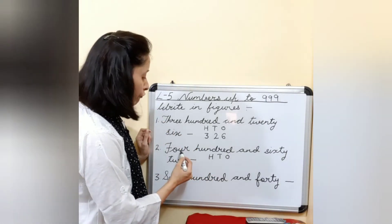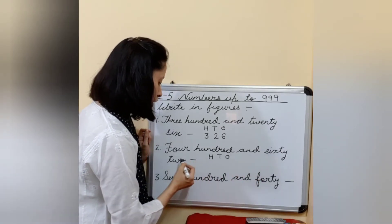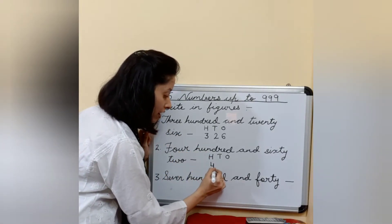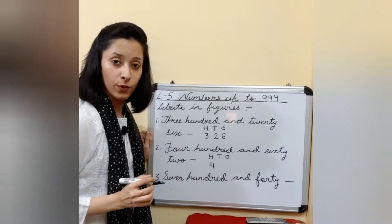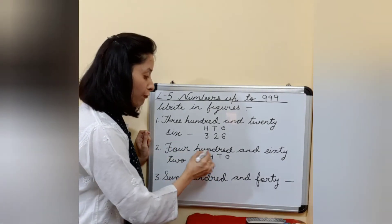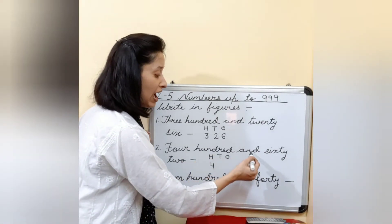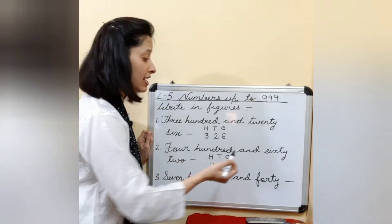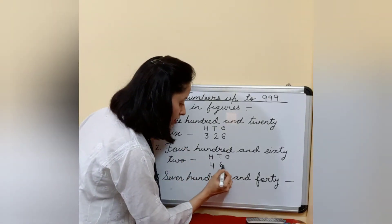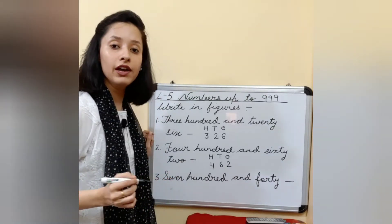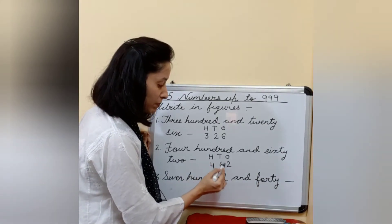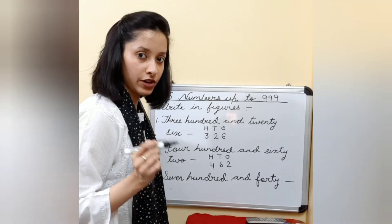See what is given to you: four hundred and sixty-two. For four hundred, you have to write only four at hundreds place — below H, you write four. What is left? Only sixty-two is left. So you simply have to write sixty-two over here, and it becomes 462. This six is at tens place and two is at ones place. Understood, children — it's very simple.